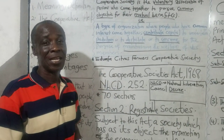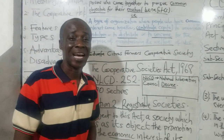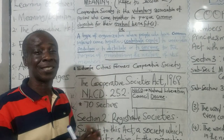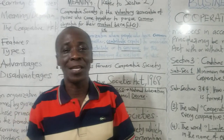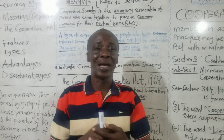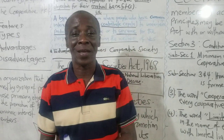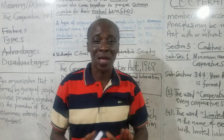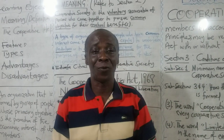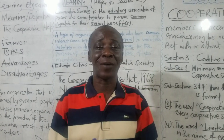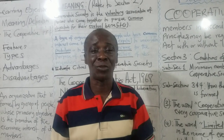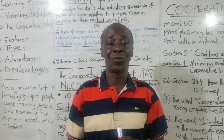In Ghana, if you are not 18 years, you are still considered a minor. So you cannot join. Apart from that, if you have capacity to join the cooperative society, as many people as want to join can join. So cooperative society is the voluntary association of persons who come together to pursue a common objective for their mutual benefit. Each member of the society benefits — it's not like the sole proprietor alone benefits.